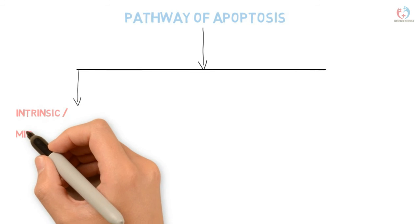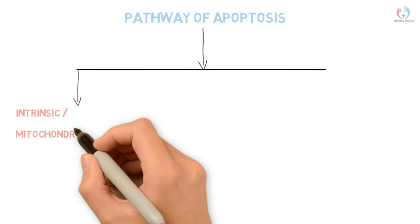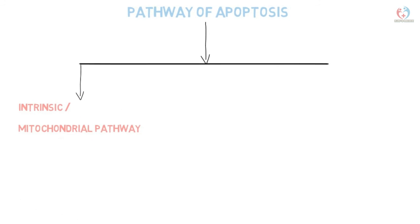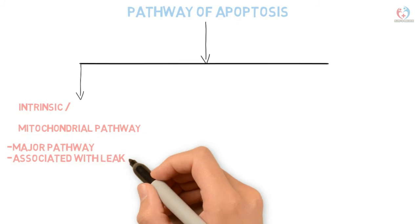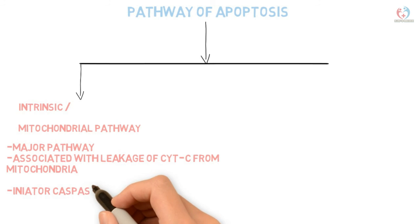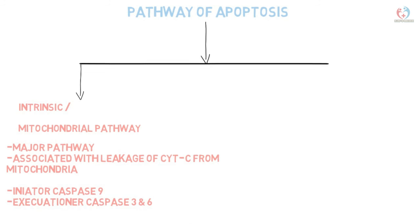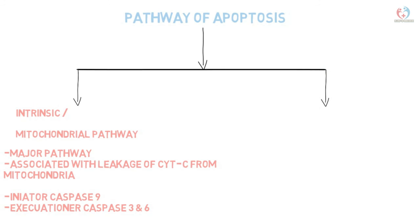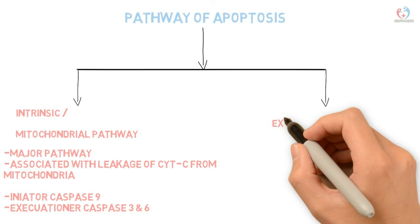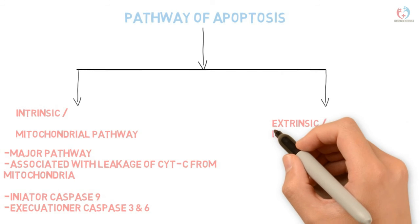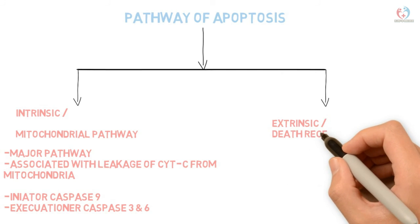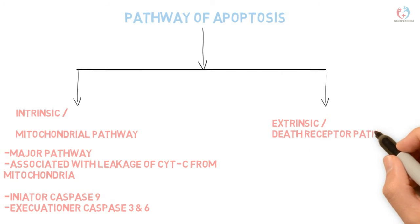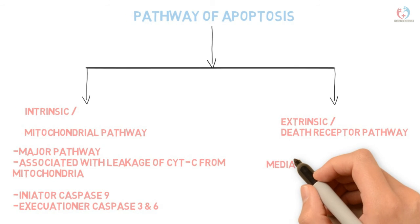Morphological changes in apoptosis include cell shrinkage, chromatin condensation, cytoplasmic blebbing, and formation of apoptotic bodies, followed by phagocytosis of apoptotic cells. Chromatin condensation is the most characteristic morphological feature. The pathways of apoptosis are divided into the intrinsic pathway and the extrinsic pathway. The intrinsic pathway, also known as the mitochondrial pathway, is the major pathway, associated with leakage of cytochrome c from the inner mitochondrial membrane to the cytoplasm. The initiator caspase is caspase-9, and the executioner caspases are caspase-6 and caspase-3.